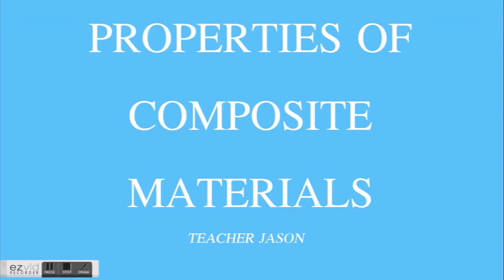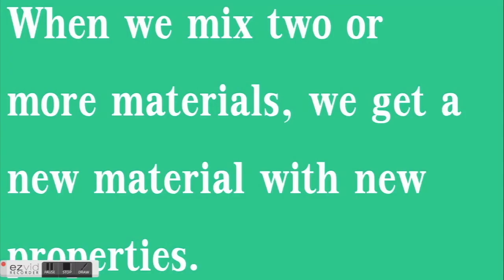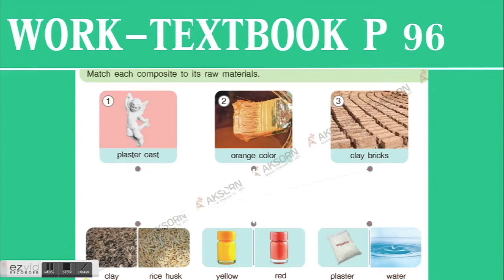Properties of composite materials — that was our last lesson. When we mix two or more materials, we get a new material with new properties. For example, plaster cast: we mix plaster and water. To make orange color, we mix yellow and red. And clay bricks: we mix clay and rice husk.